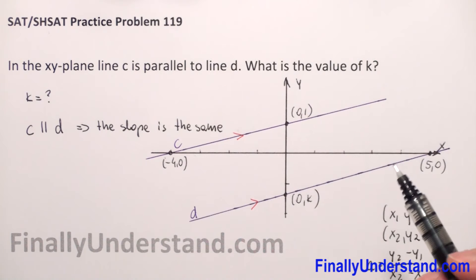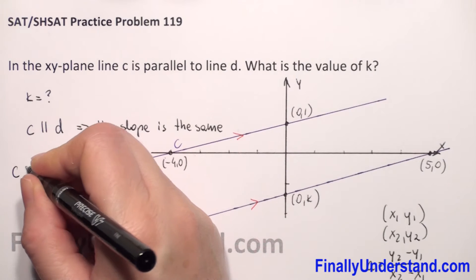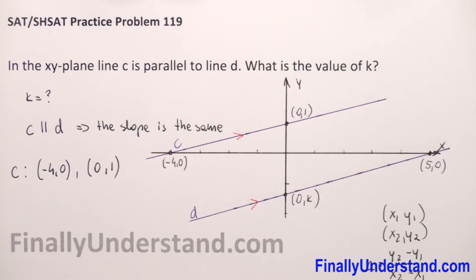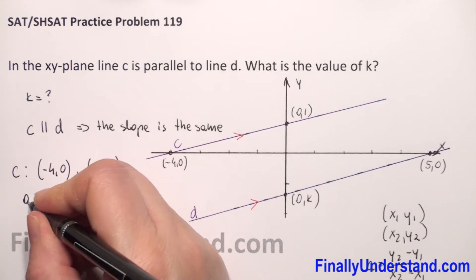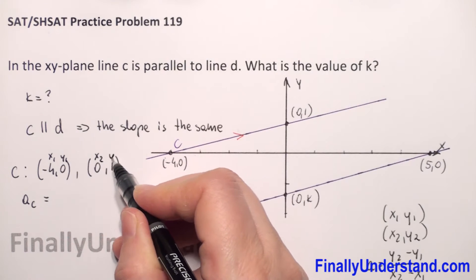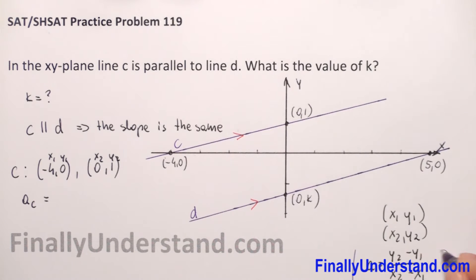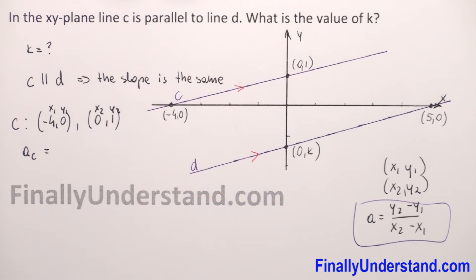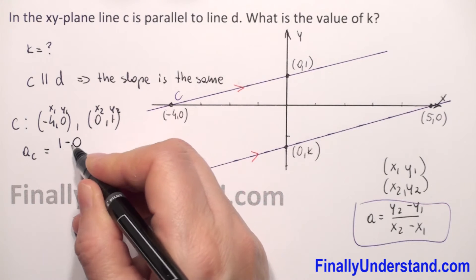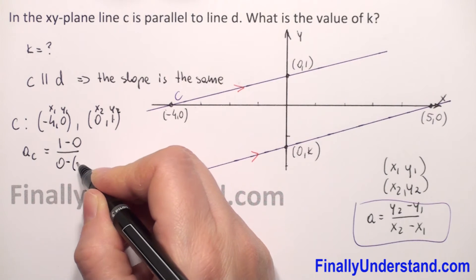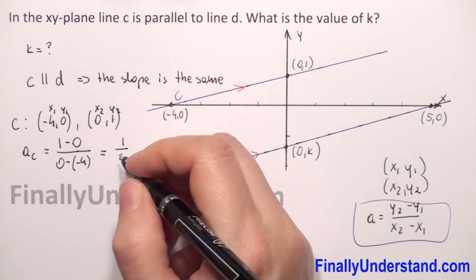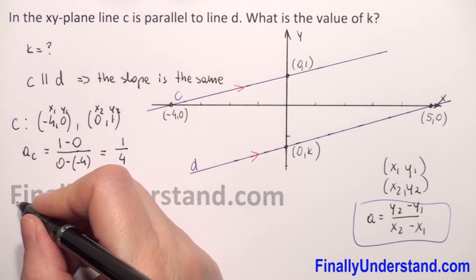We have given two points so we can calculate the slope of line C. We have negative 4, 0 and the second point is 0, 1. So the slope of line C — this is our first point x1, y1 and x2, y2. In the numerator we have to subtract y coordinates, so we have 1 minus 0 over 0 minus negative 4. Negative and negative give positive, so slope of line C is 1 over 4.